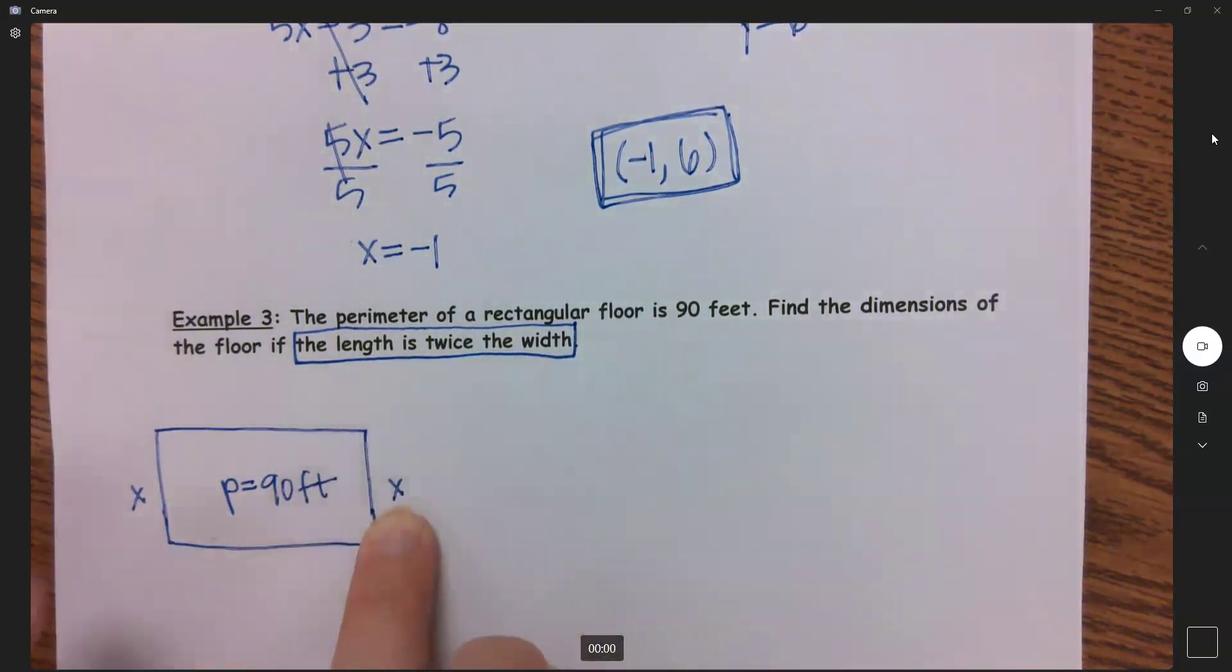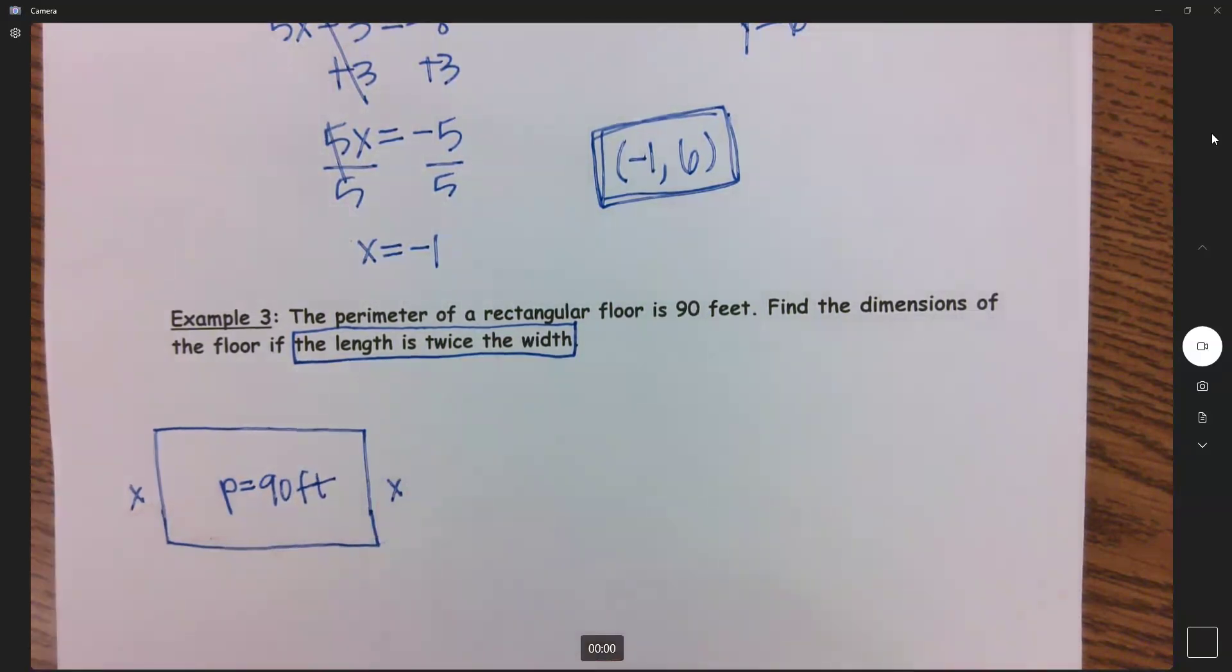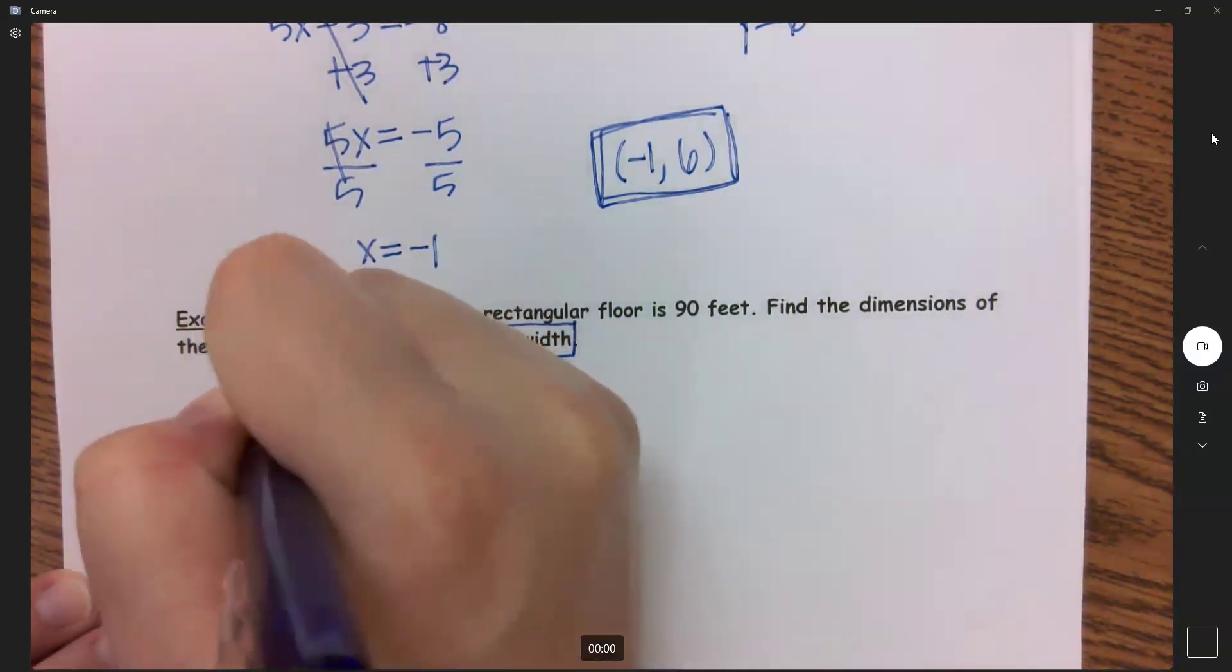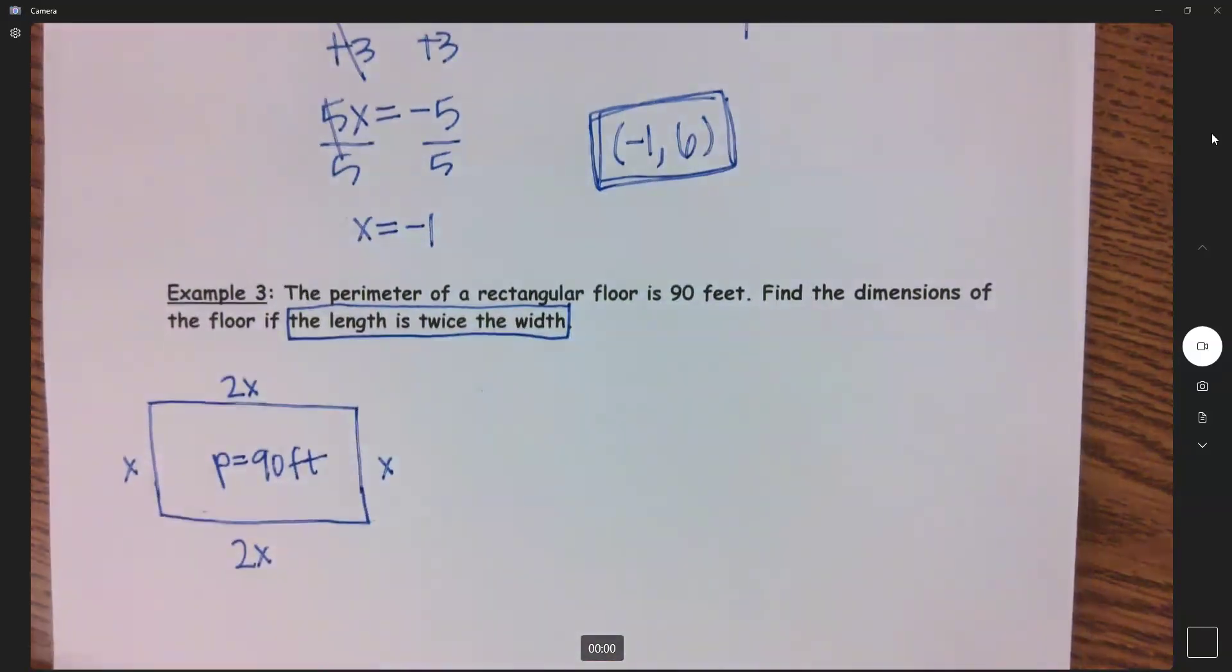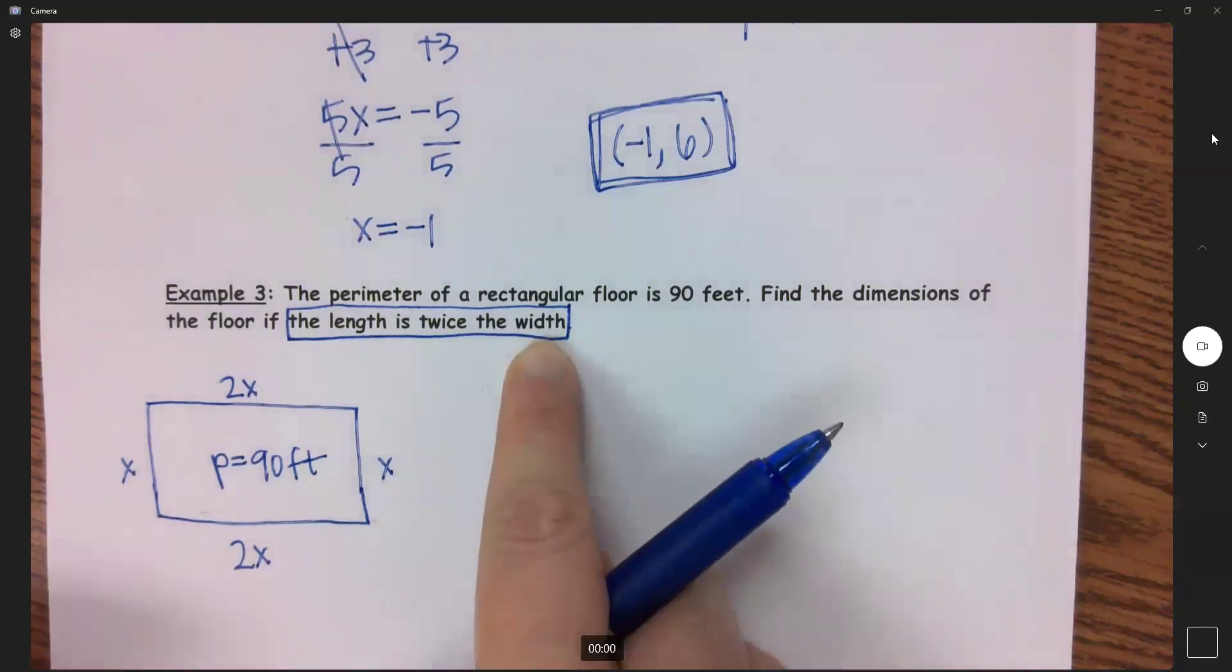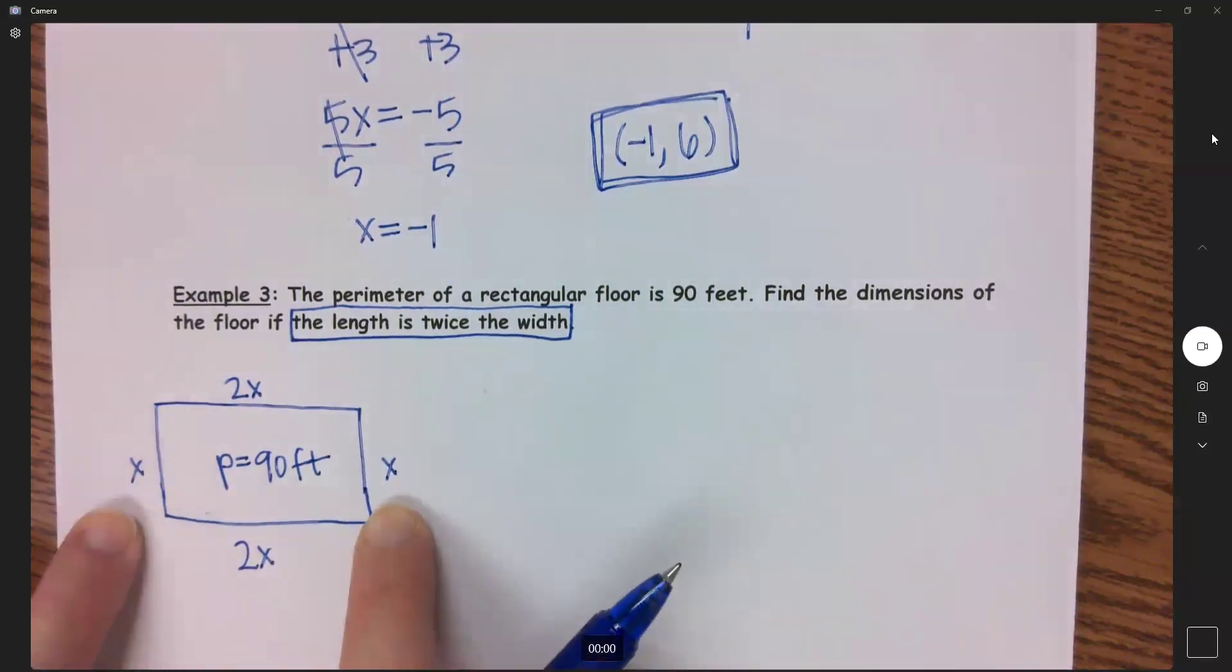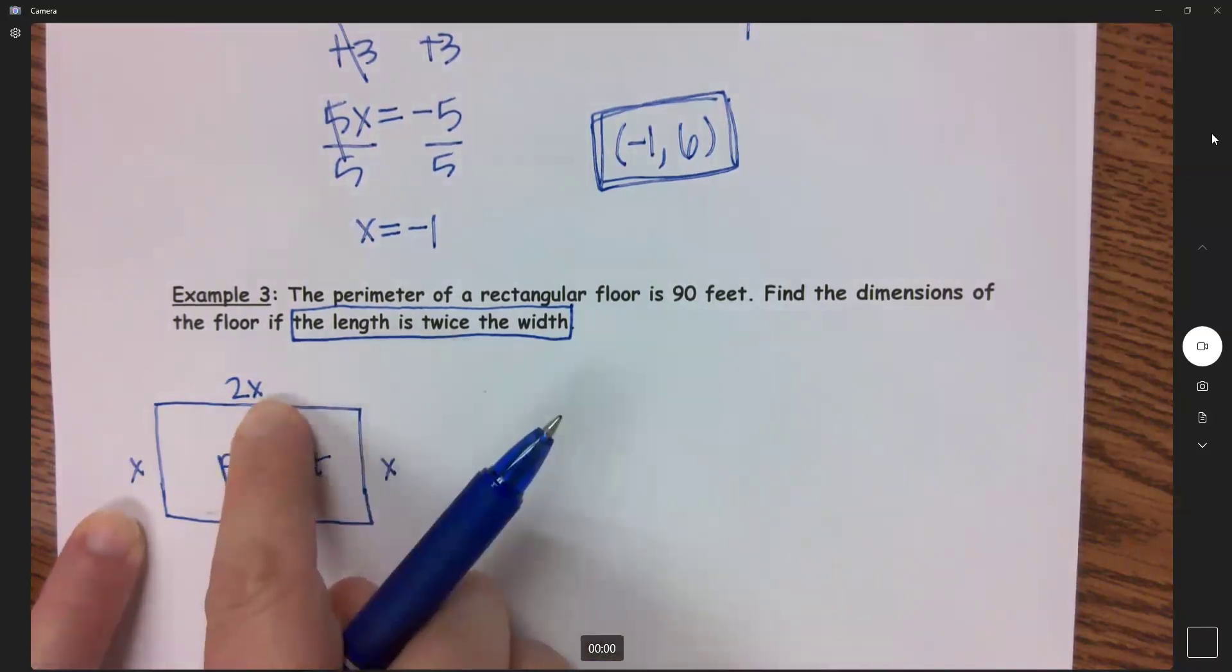So if my width is x, how do you represent that the length is twice the width? That would be 2 times x. Okay, the length is twice the width. I don't know anything about my width. That's my starting point. That's my x. And now to represent that the length is twice, 2 times x.